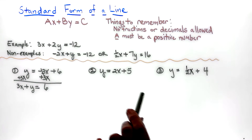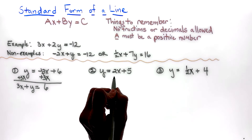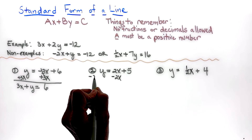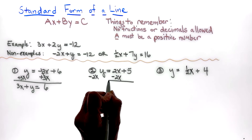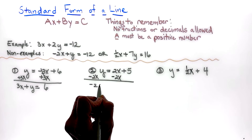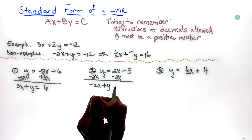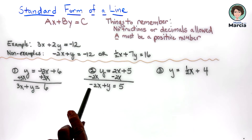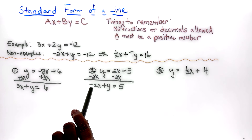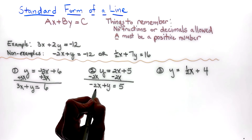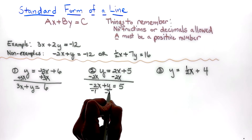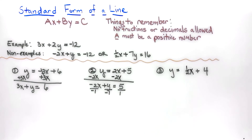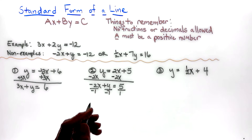Looking at the next one, y equals 2x plus 5: I subtract 2x to the other side, getting negative 2x plus y equals 5. But we don't want a negative leader — A must be positive — so I divide everything by negative 1, which changes all the signs.